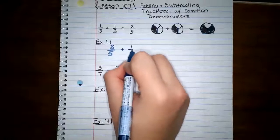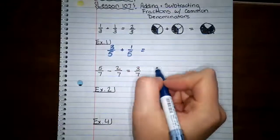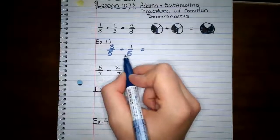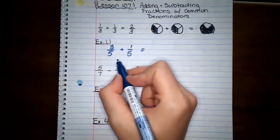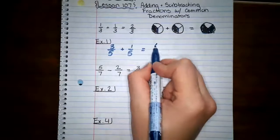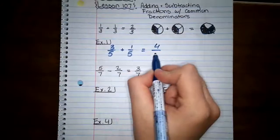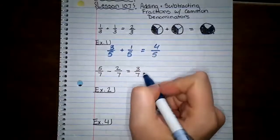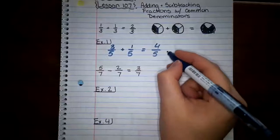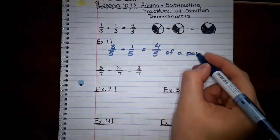Okay, three fifths plus one fifth. Now remember, we're only adding our top numbers. We're not adding our bottom numbers because it still stays out of fifths. So three fifths plus one fifth. Three plus one is four. Five stays the same. It's our denominator. It's not changing. And now we have four fifths. And don't forget our label of a pound.